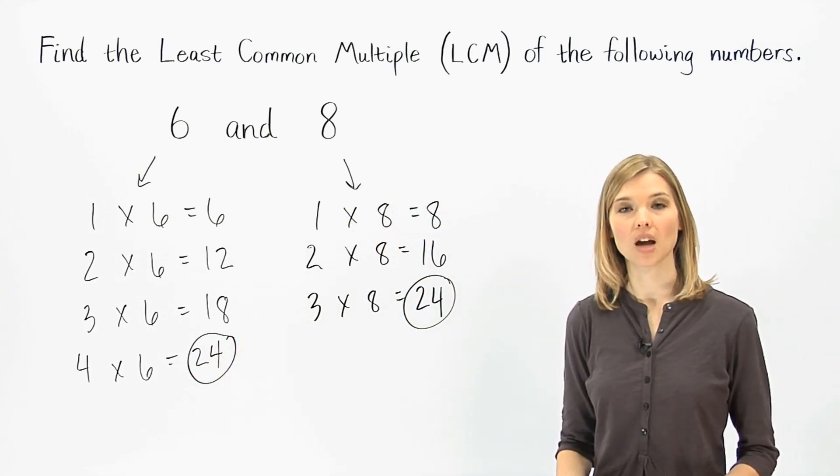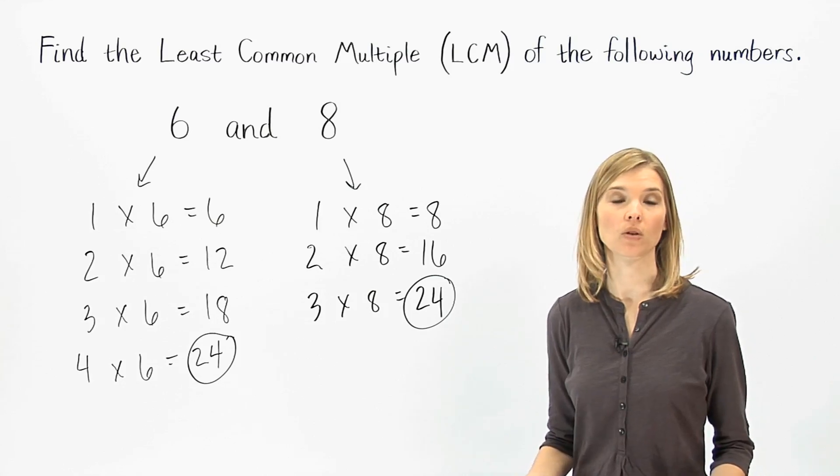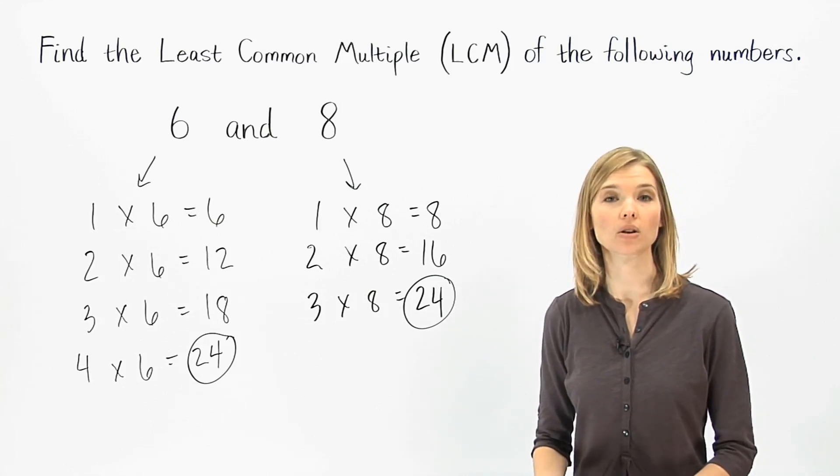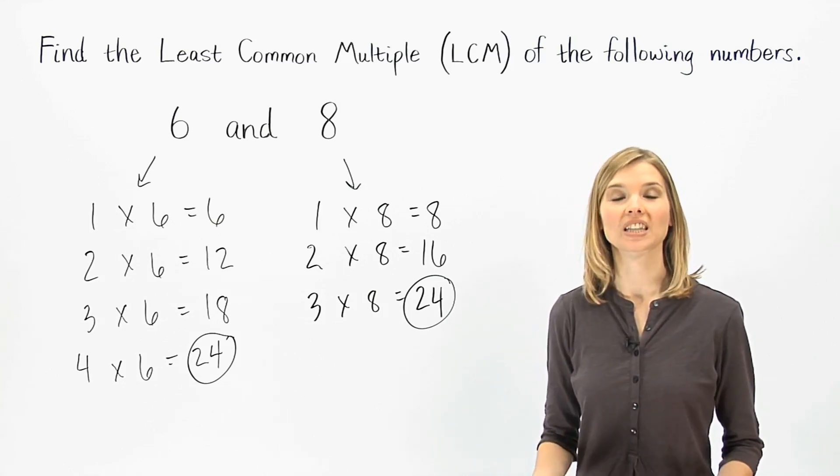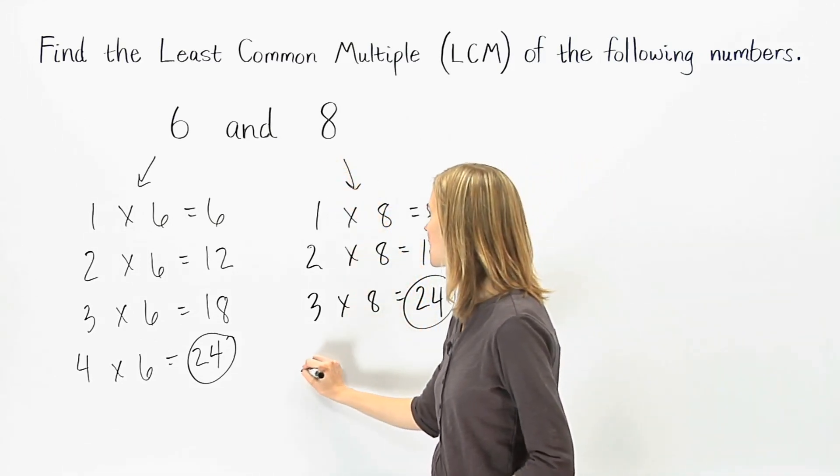Notice that we can stop here, because we only want the least common multiple, and any other multiples we find for these two numbers will be greater than 24. So, the least common multiple, or LCM, of 6 and 8 is 24.